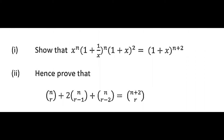Hello and thanks for using TickBoom. A student has sent through this two-part question where the first part says to show that x to the n times 1 plus 1 on x to the n times 1 plus x squared is equal to 1 plus x to the n plus 2, and then we're told hence prove that nCr plus 2nC(r-1) plus nC(r-2) is equal to (n+2)Cr.